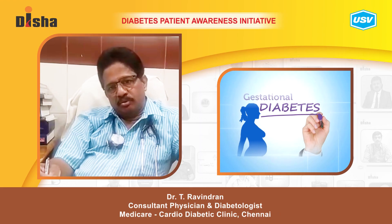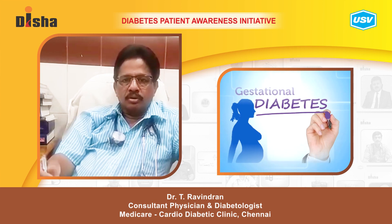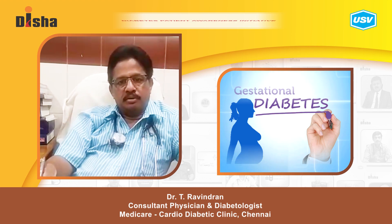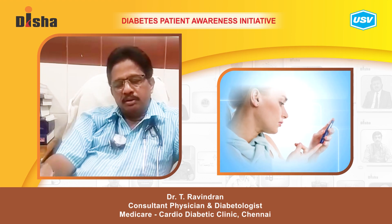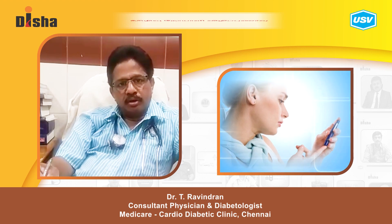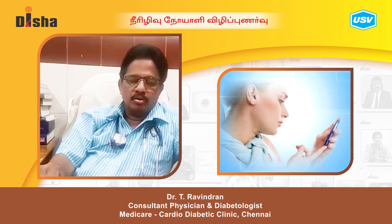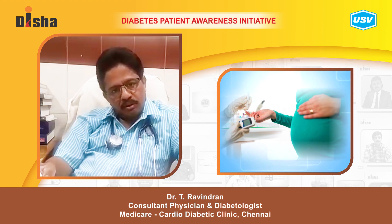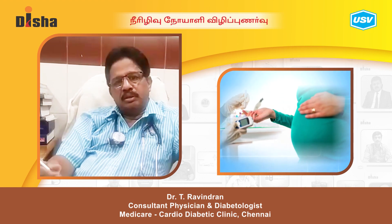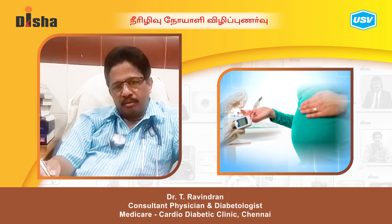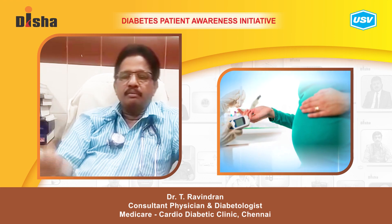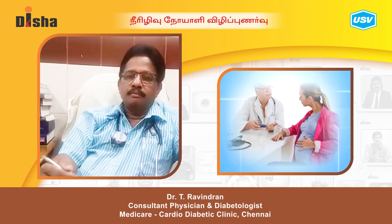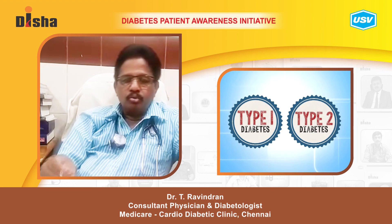Let us discuss something about gestational diabetes. Some women may develop diabetes during gestation. Gestational diabetes means the first onset of raised blood sugar in a woman who is undergoing pregnancy. It has its own harmful effects — on the mother it may cause eye problems, heart problems, and other complications. The baby may also be born with birth defects. This condition can occur as type 1 or type 2 diabetes.